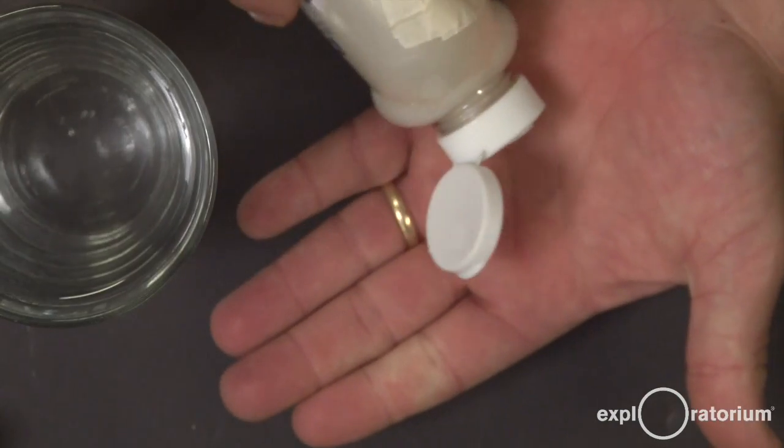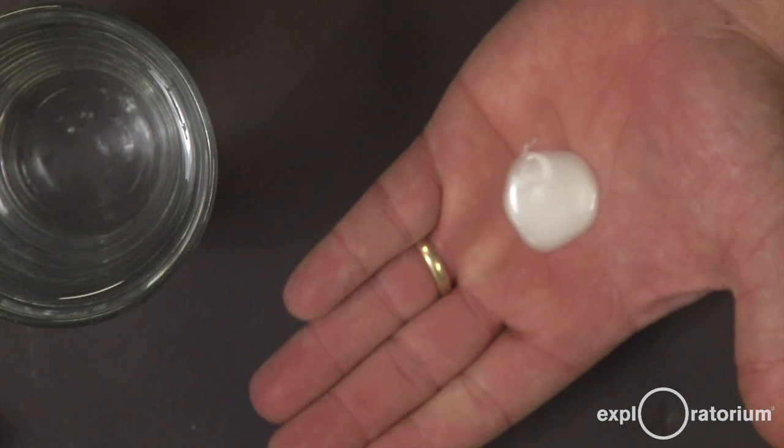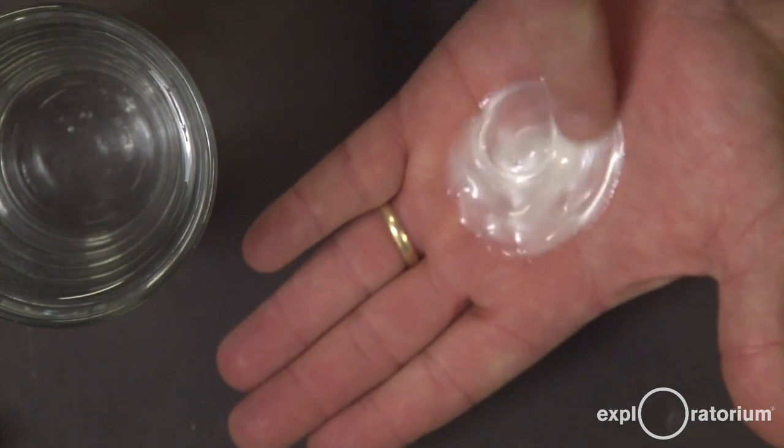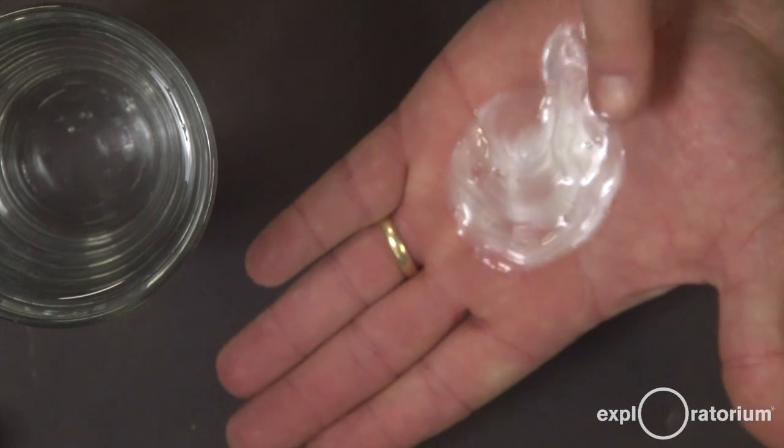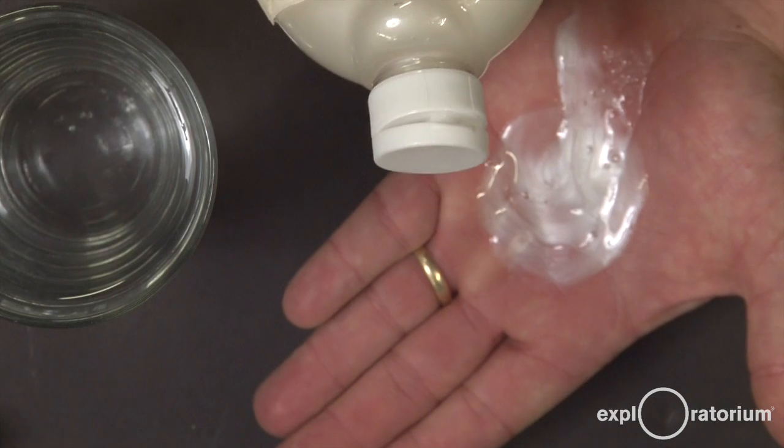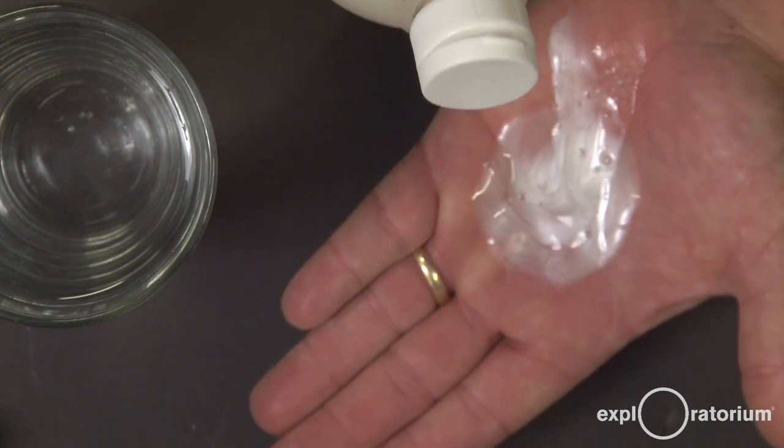What's important about your soap is that it has a pearlescent quality to it. This is how I test to make sure this is going to work. I put a little in my hand, I rub it around, and get this nice reflective quality in it. Some brands will work better than others. It's up to you to figure out what brand will work best for your experiment.